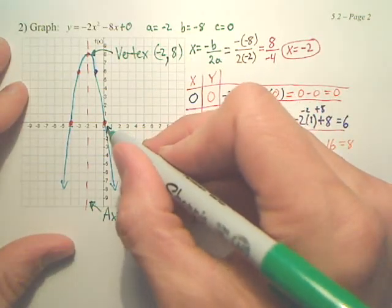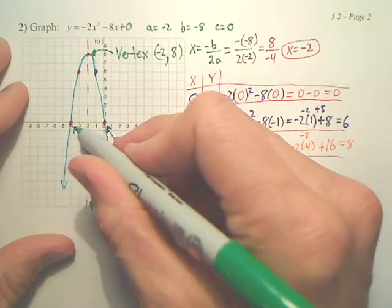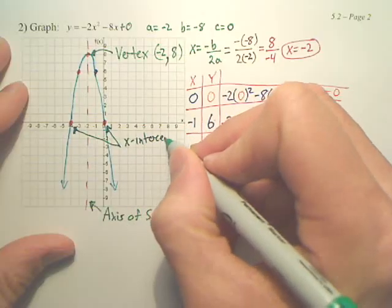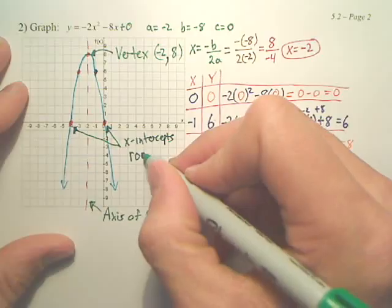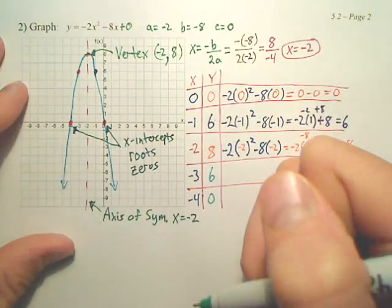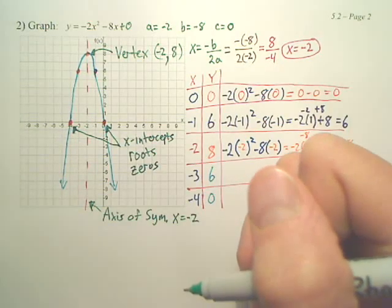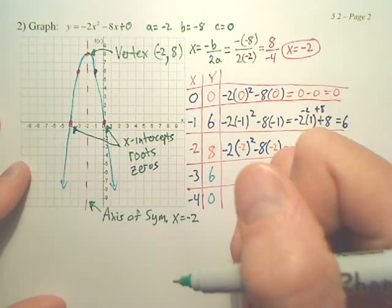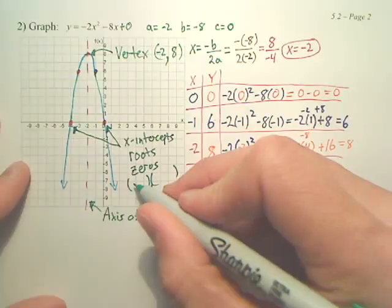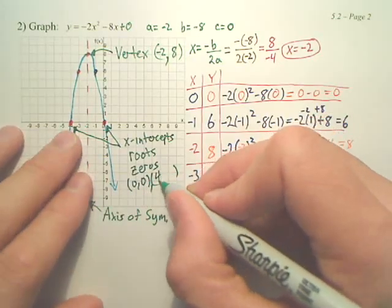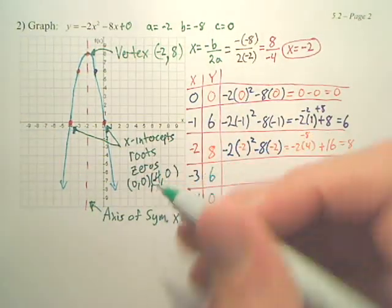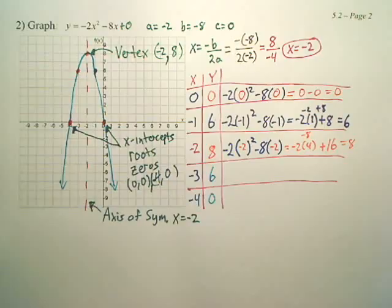Next. This point and this point are called x-intercepts, roots, and zeros. Roots or zeros. They have all three names depending on which one they're asking for, but they're called all three. And the coordinates for those are 0, 0 and negative 4, 0.